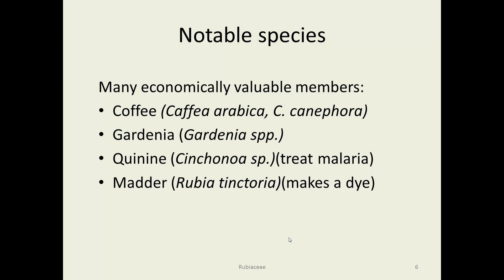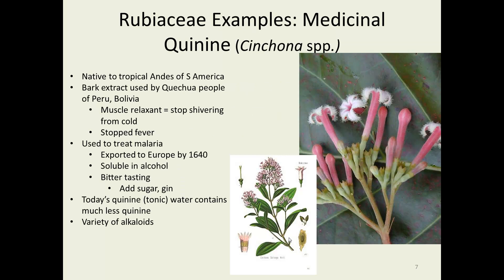Notable species: coffee is generally Coffea arabica, but sometimes Coffea canephora. Gardenia is very widely grown in warmer areas. Quinine used to be much more important than it is now, but it's still used to make quinine water. And madder, Rubia tinctoria, is used for dye.